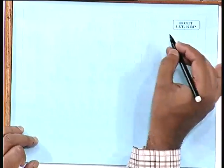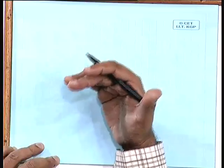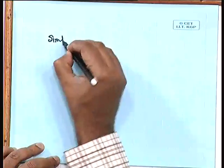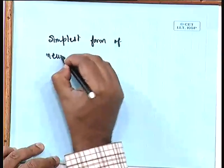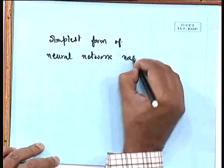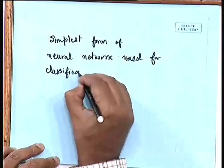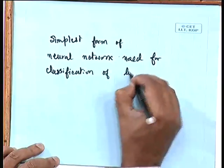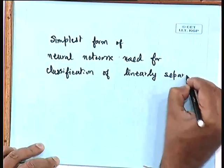In its simplest form, a perceptron is a network that can classify linearly separable patterns. It is the simplest form of neural network used for classification of linearly separable patterns. What is meant by linearly separable patterns?